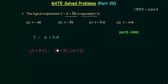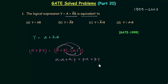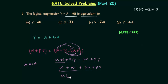Opening the bracket gives alpha·alpha, alpha·gamma, beta·alpha, and beta·gamma. Alpha and alpha equals alpha. So we have alpha or (alpha·gamma) or (beta·alpha) or (beta·gamma). Taking alpha common from the first three terms gives alpha·(1 or gamma or beta) or (beta·gamma). Since 1 or anything equals 1, we finally have alpha or (beta and gamma).